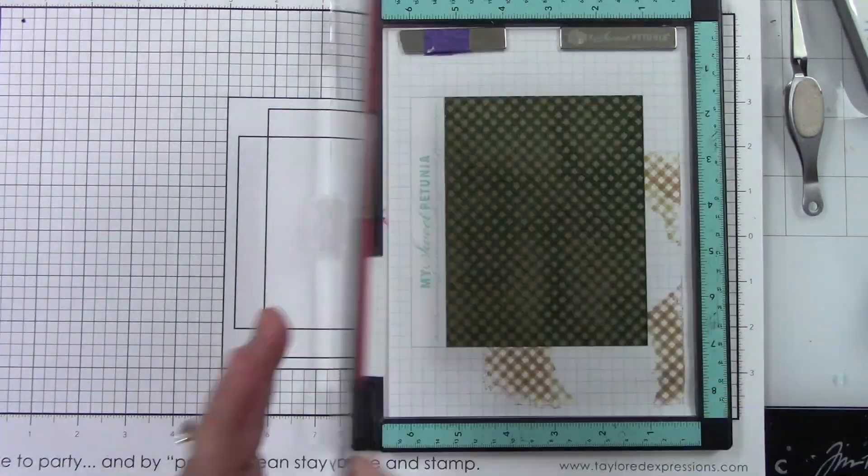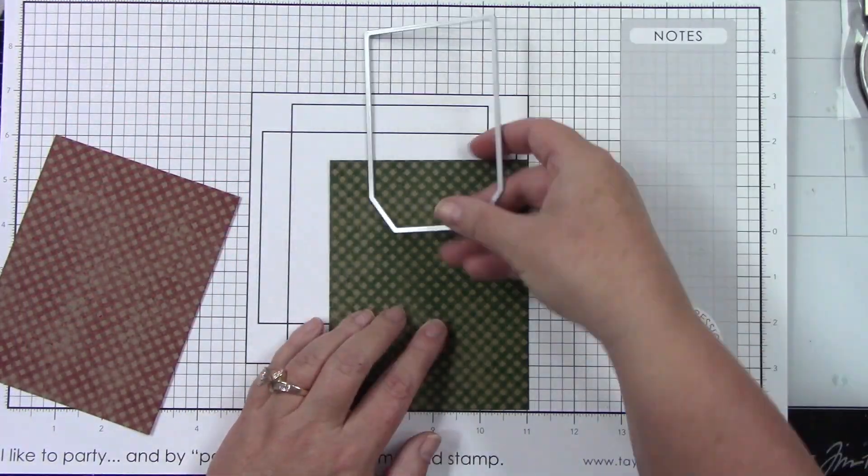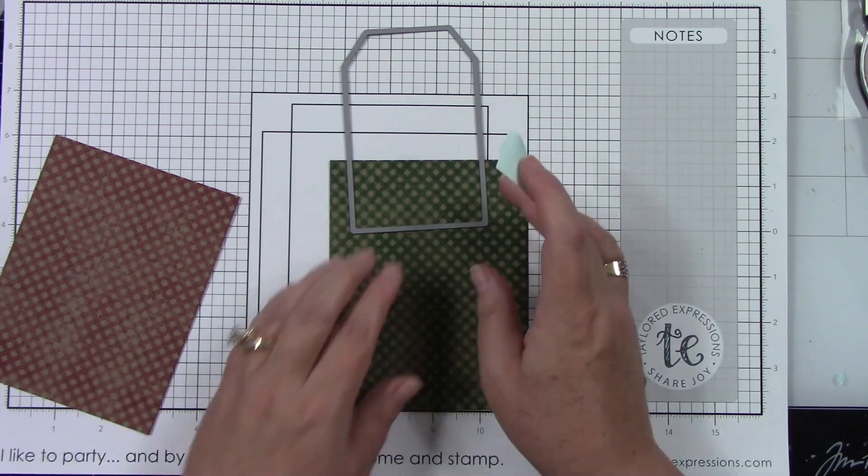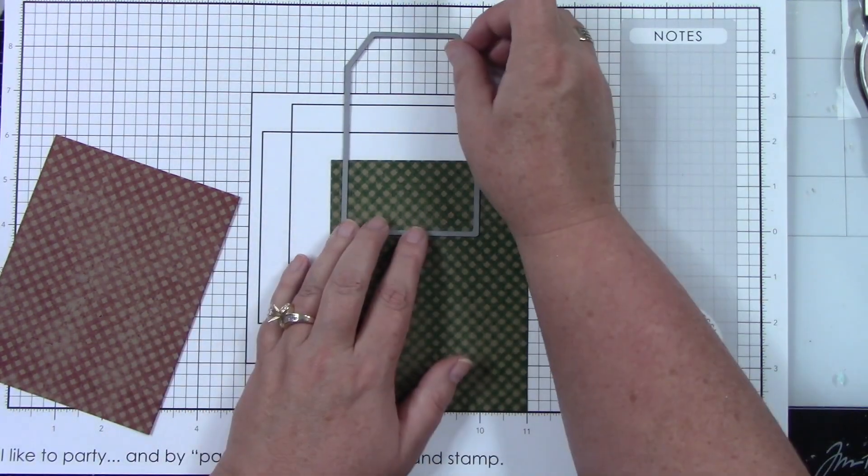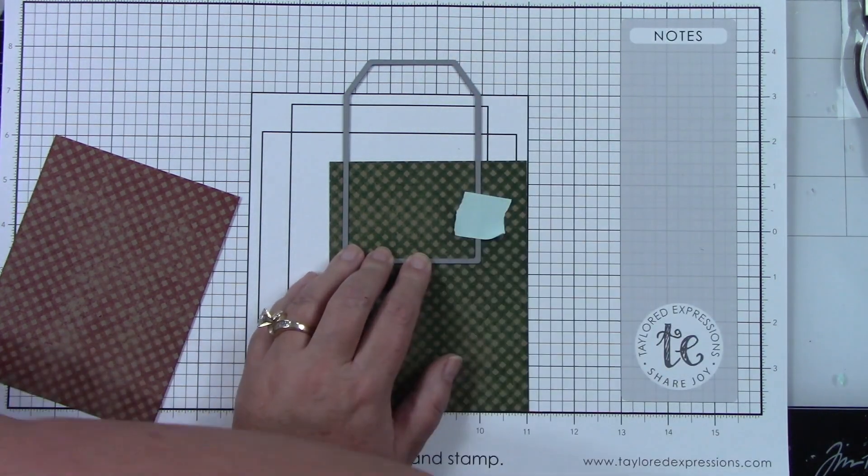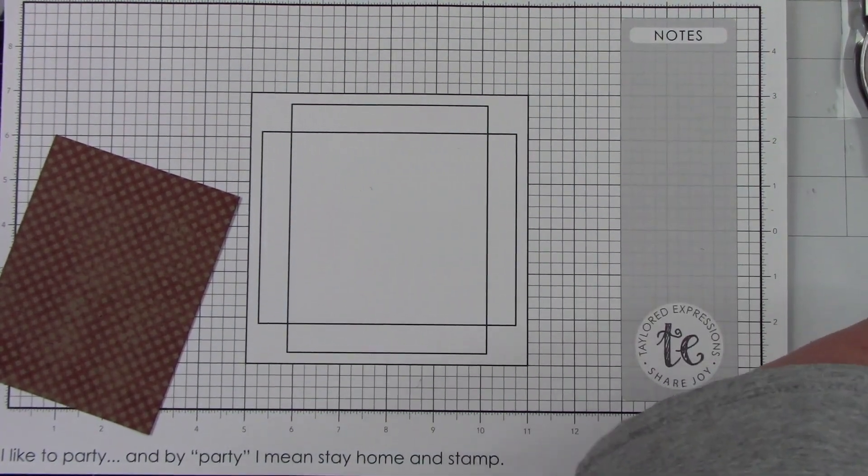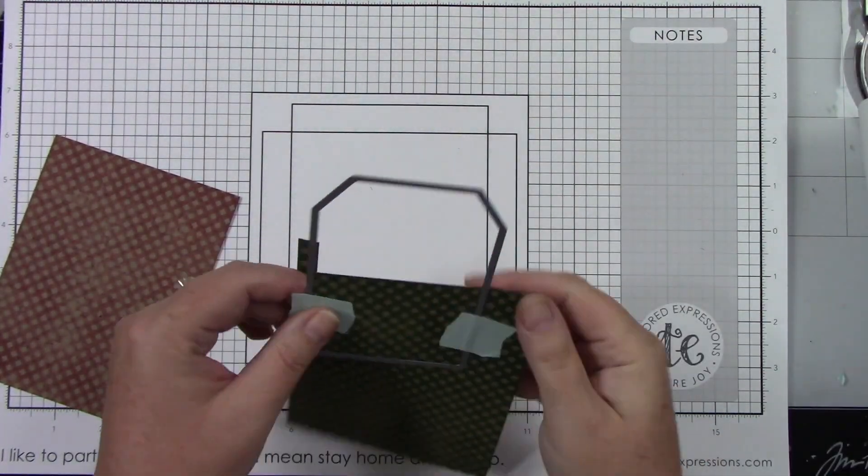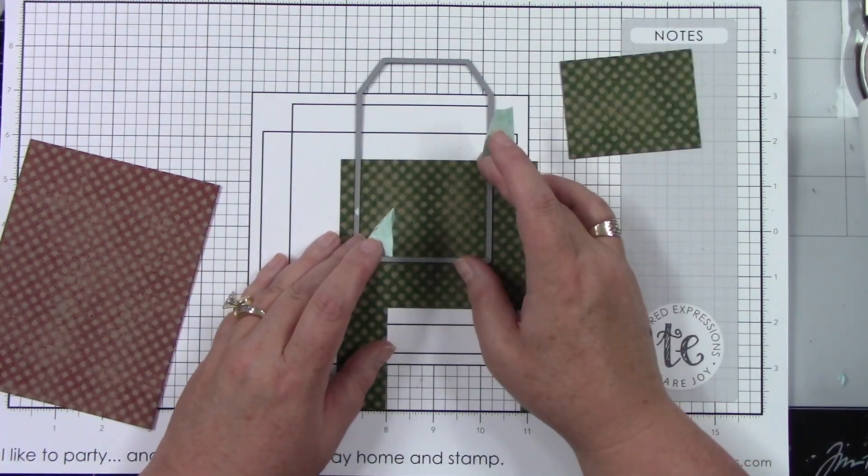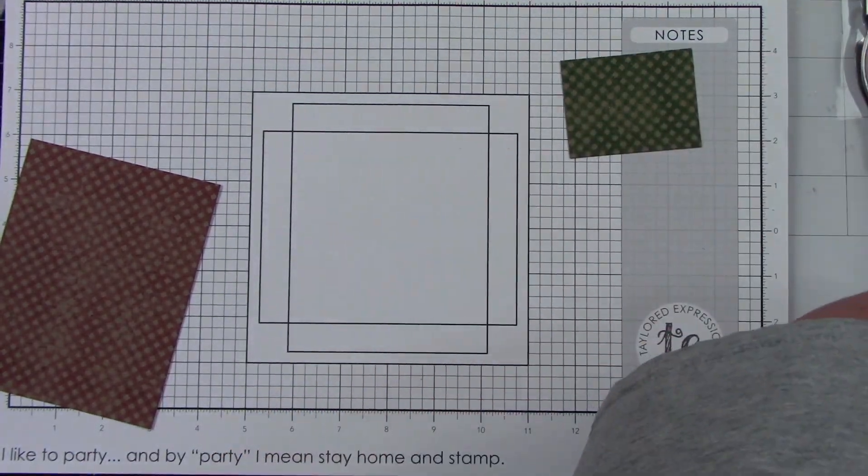I'm getting the largest tag die out of the Tag Stacklets 2 dies and I'm just going to line this up. I'm using the grid paper to help me decide how large of a piece I want because I'm going to die cut this and then adhere it to another piece that I die cut using this tag from the Latte cardstock. I'm going to get two tags out of each of the green and red backgrounds here. Now we have this bottom piece and that's what I'm going to adhere to the bottom of another die cut tag the same size using Latte cardstock.